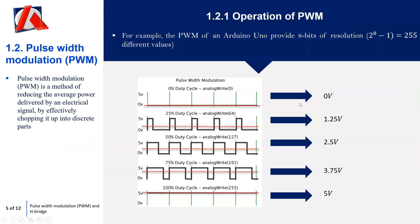However, that isn't very useful for control, because we probably don't want to just be turning the motor fully on and off. We want to be controlling the speed between on and off. So we use pulse width modulation — a method of reducing the average power delivered by an electronic signal by effectively chopping it up into discrete parts. What you've just seen corresponds to zero duty cycle — effectively applying zero volts — and a hundred percent duty cycle — applying five volts.